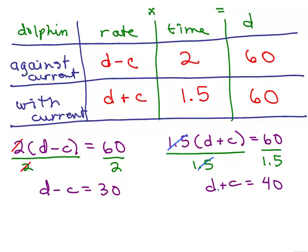But we'll go back to here. In any case, you should get d minus c equals 30 for one of your equations and d plus c equals 40 for the other equation if you use this technique instead of doing the distributive property.